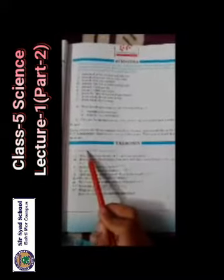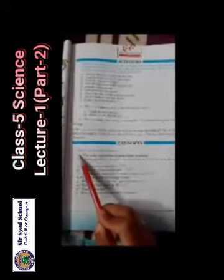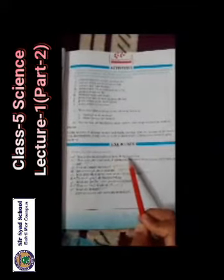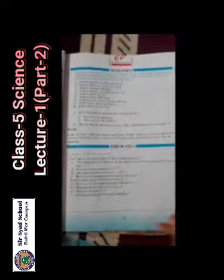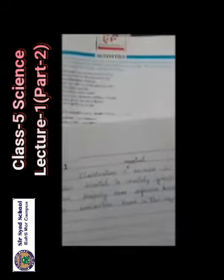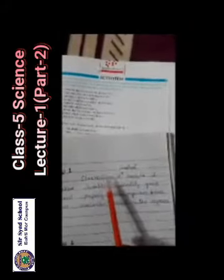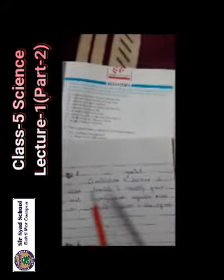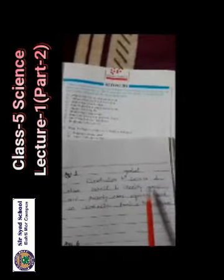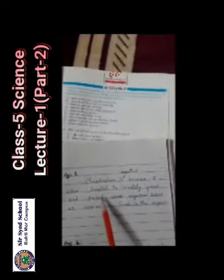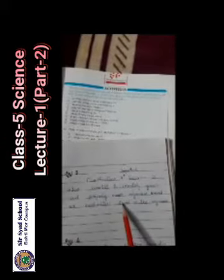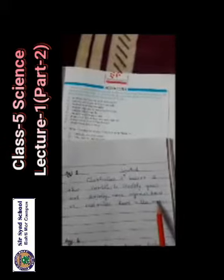Question number 1: Answer the following questions. Why is the classification of living things necessary? Its answer is: Classification is important because it allows scientists to identify, group, and properly name organisms based on similarities found in the organism.